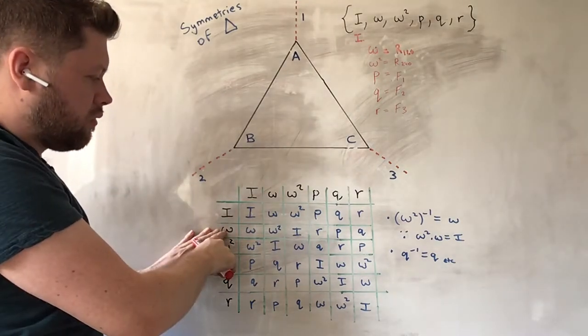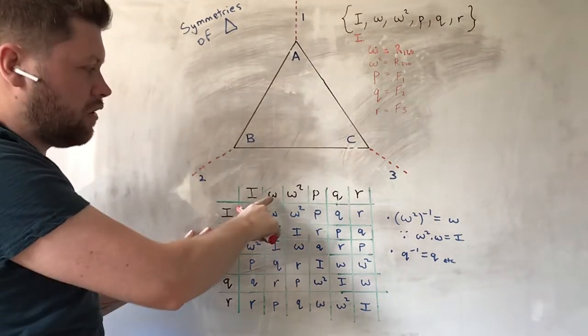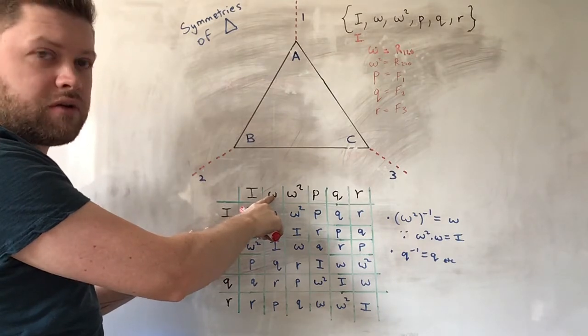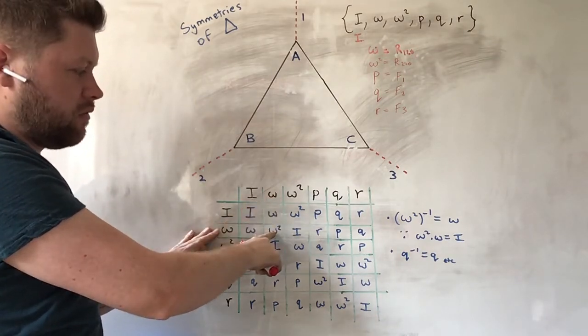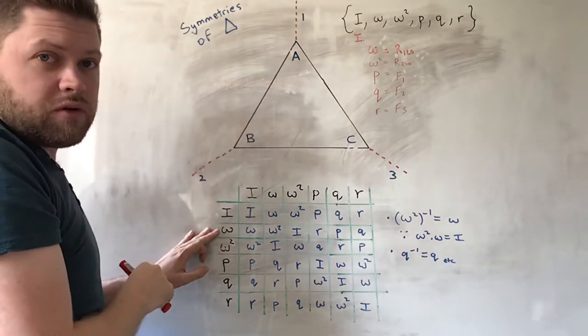If we do omega, rotation 120 degrees, and then another rotation of 120 degrees, we get omega squared, which is a rotation of 240 degrees.